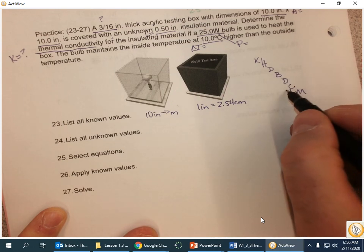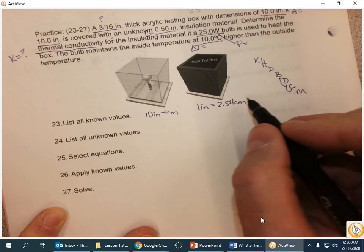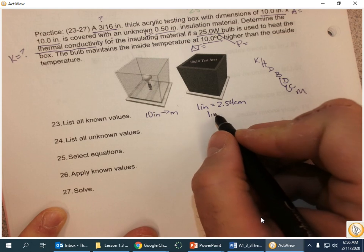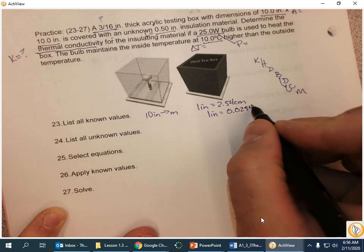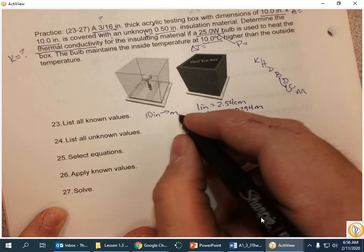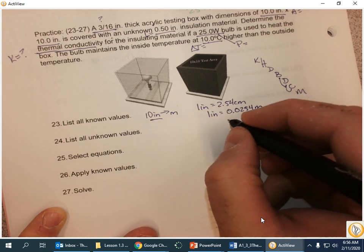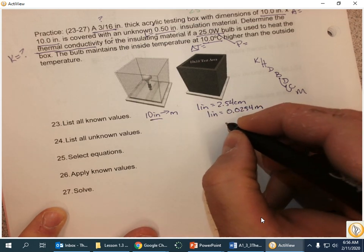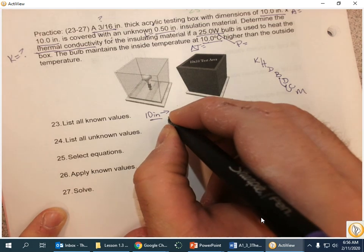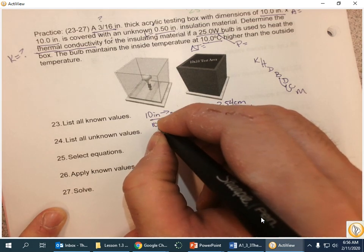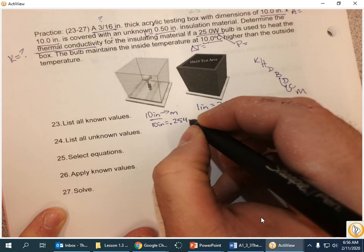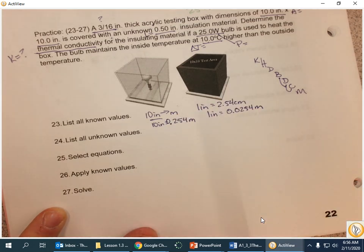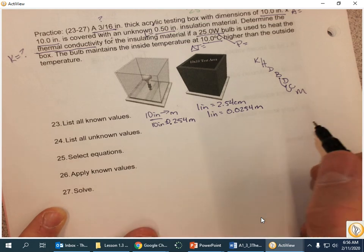I'm in centimeters, and I want to get to meters, so two spaces to the left. So, one inch is 0.0254 meters, and if I've got 10 inches, I'm going to multiply that by 10. So, in meters, 10 inches is equal to 0.254 meters.